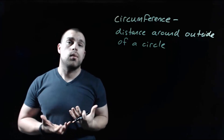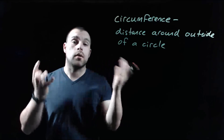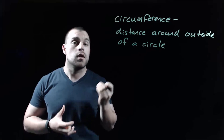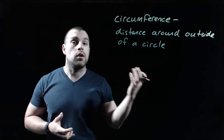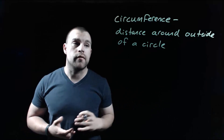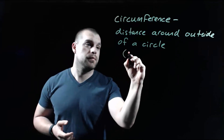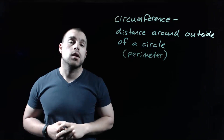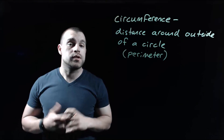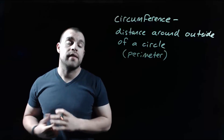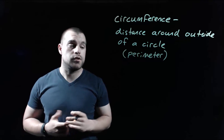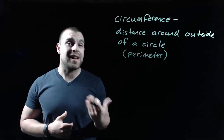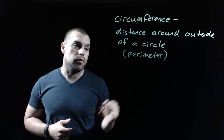Another way to think about it is, since we're talking about the distance around the outside of our circle, that could also be called the perimeter of our circle. Now there are two formulas that we're going to use depending on what we're given as far as our circle goes. In the first formula we're going to be given a diameter of the circle.